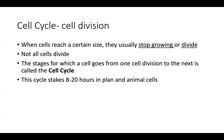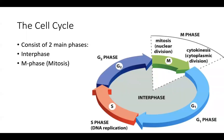The cell cycle takes anywhere from eight to 20 hours depending on the organism. In plants and animal cells, this process of completing one entire cycle can take anywhere from eight to 20 hours. The cell cycle consists of two main phases: interphase and M phase.